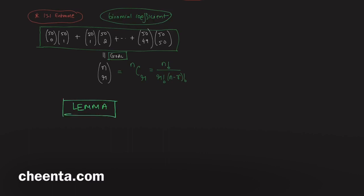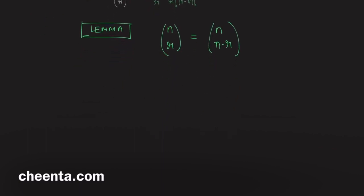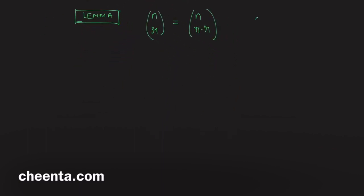The lemma is: n choose r is equal to n choose (n minus r). Of course you can prove this using the formula, but I would say do not do this using the formula — let's use a combinatorial argument instead.